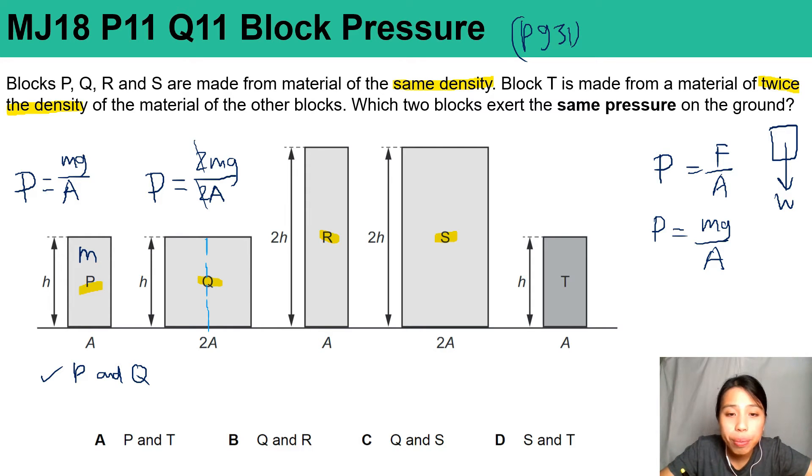Let's look at the others. The third one, R, is kind of like having P stacked together because it's double the height. So here got one mass, another here, m and m, two mass. So the pressure is also 2m times g over a very small area, only A. So that's a different pressure already.